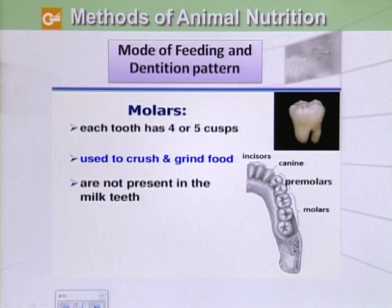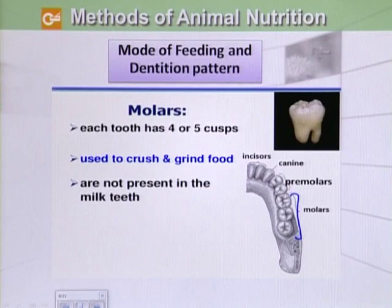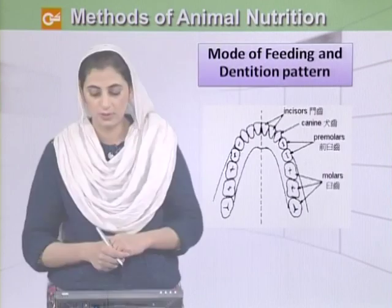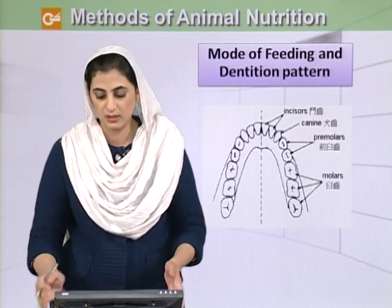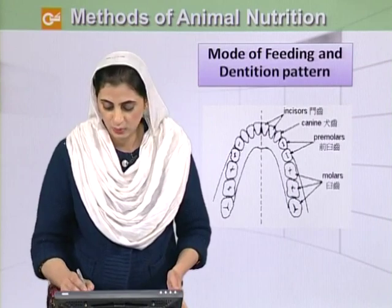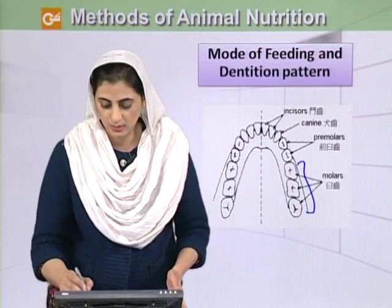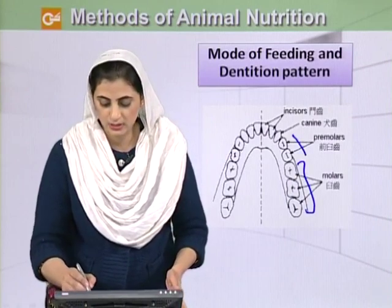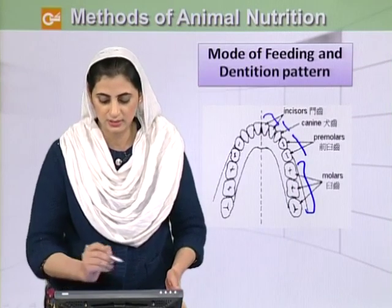Then we have molars, which have four or five cusps and are used to crush and grind food. They are not present in the milk teeth of humans. You can see here the division showing molars, premolars, canines, and incisors.